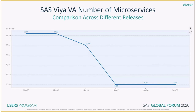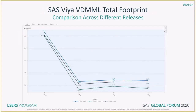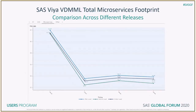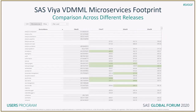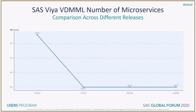The next four slides have similar charts and reports for SAS Visual Data Mining and Machine Learning, or VDMML. These slides show, respectively: the total footprint for VDMML, the total microservices footprint for VDMML, the individual microservices footprint for VDMML, and the total number of microservices for VDMML.